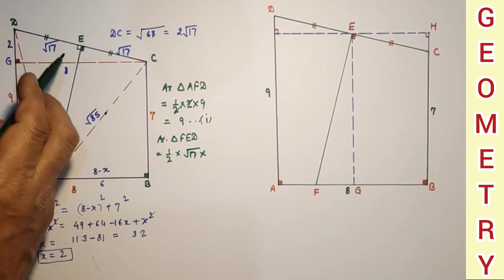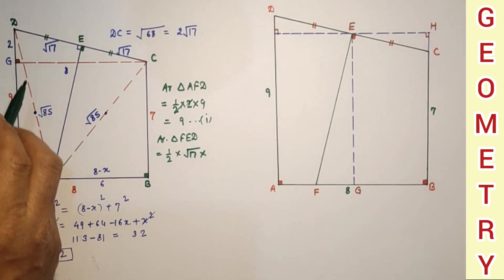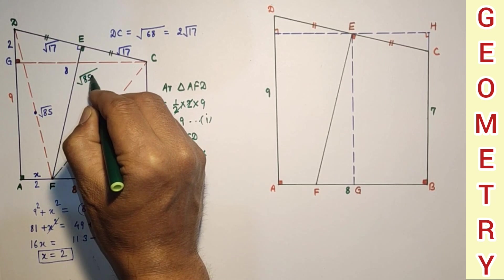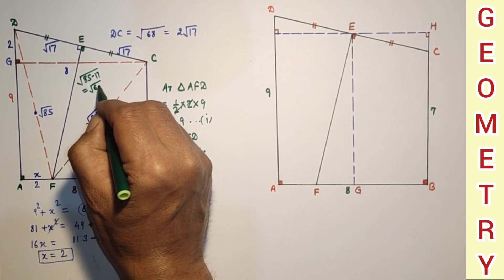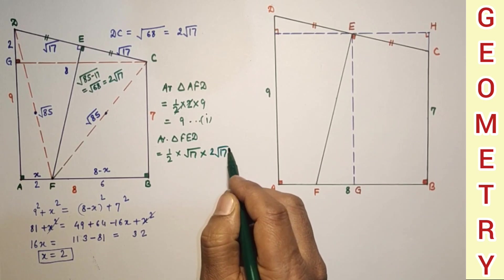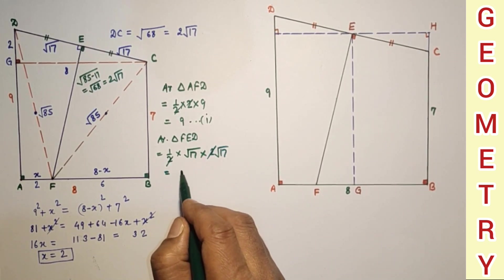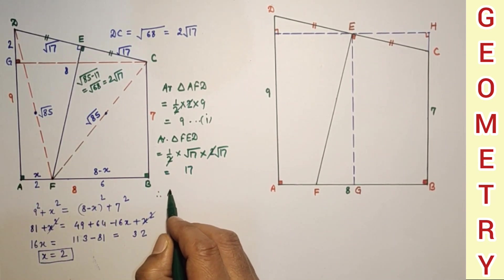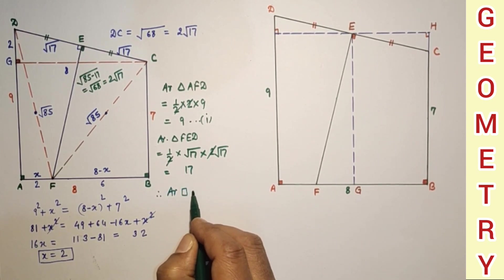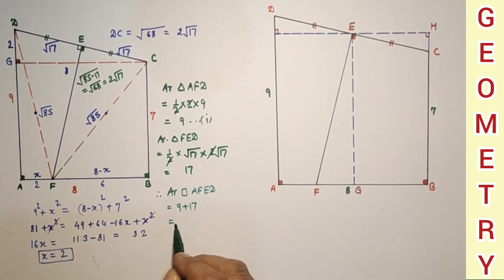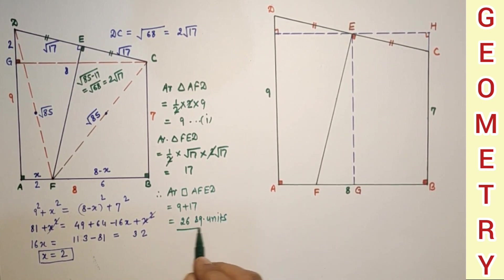To find EF: EF² = DF² − DE² = 85 − 17 = 68, so EF = √68 = 2√17. Area of triangle FED = ½ × √17 × 2√17 = ½ × 2 × 17 = 17. Therefore, area of quadrilateral AFED = 9 + 17 = 26 square units.